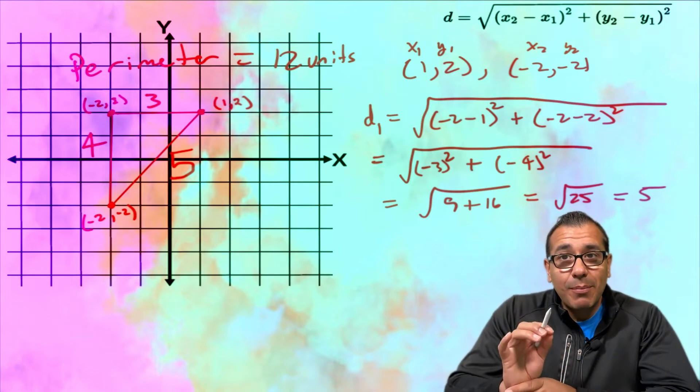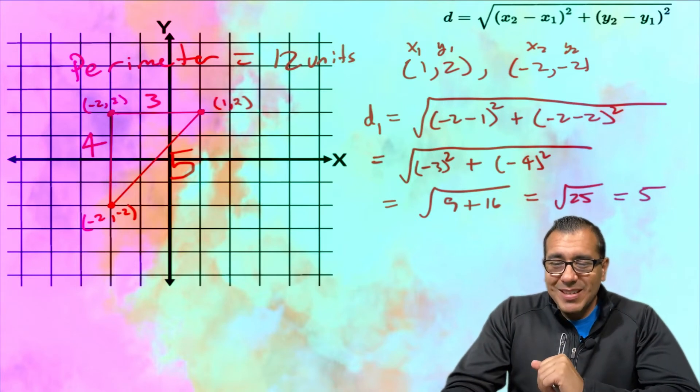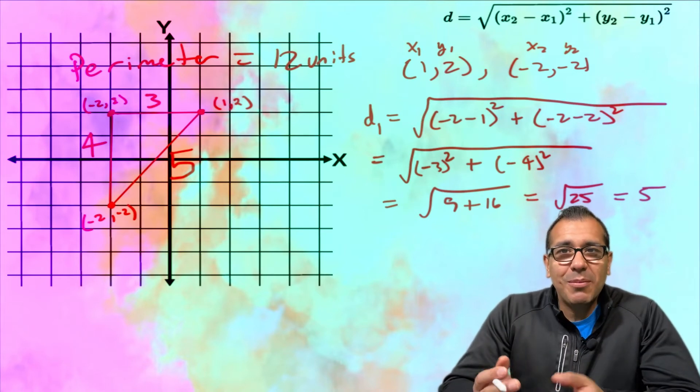What's very nice about this is even if I accidentally switch the x1 and x2, when I square it my answer is going to be the same. So that's a nice thing about this formula in case we make a mistake.